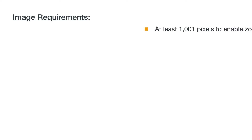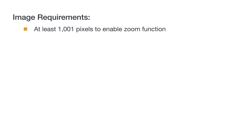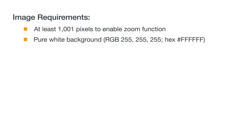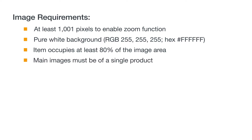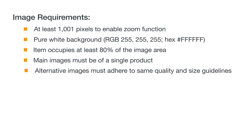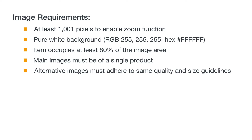Let's review important requirements for your images. Failure to meet these technical and style requirements could result in the suspension of your seller account. Images must be at least 1,001 pixels on one side — this allows customers to zoom in on specific details. The image background must be white. The entire product should be visible and occupy at least 80% of the image area. Main images must be of a single product, meaning you can't show stacks or multiple products. Alternate images can be different angles, views, or swatches, but must adhere to the same quality and size guidelines.